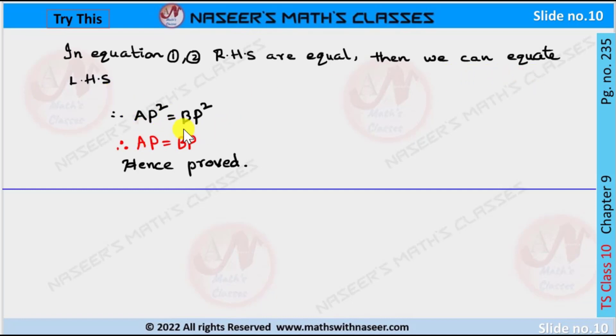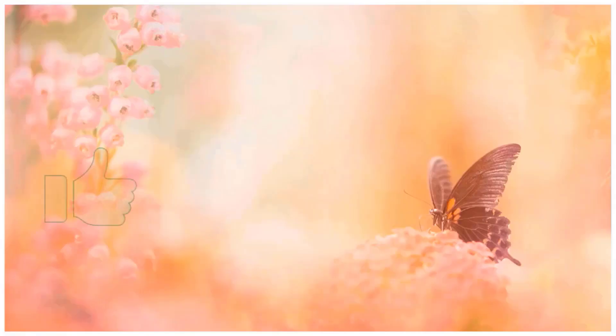And it can be written as AP = BP. These two are the tangents from the external point P. Therefore, AP and BP are the tangents from external point, hence proved. Please like, share, subscribe our channel for latest updates by pressing the bell icon.